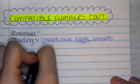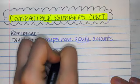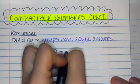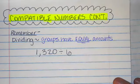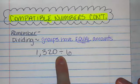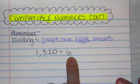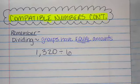We are going to do 1,320 divided by 6. And guess what? Just like yesterday, 1,320 does not divide equally into 6. It's not going to be even groups. So we're going to have to estimate.